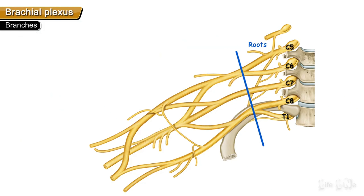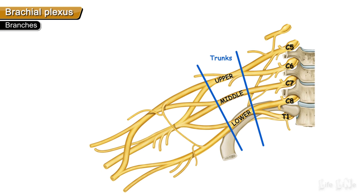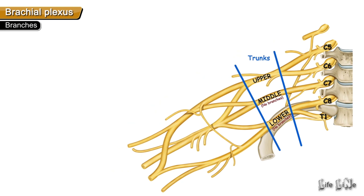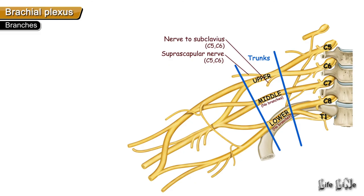Moving on to branches from the trunks: only the upper trunk gives rise to branches — there are no branches from the middle or lower trunk. The upper trunk gives rise to the suprascapular nerve and the nerve to subclavius. The suprascapular nerve supplies both the supraspinatus and infraspinatus muscles.